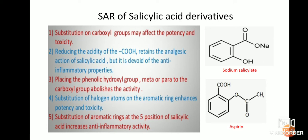Next is the structural activity relationship of salicylic acid derivatives. On the right side I have given examples: sodium salicylate and aspirin. Substitution on the carboxylic group may affect the potency and toxicity — for example, the sodium salicylate structure has a COONa group.